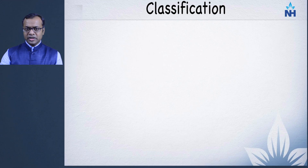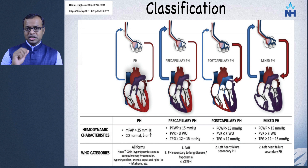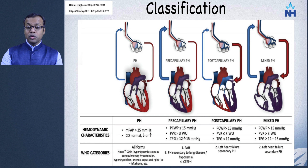In a general sense, you can classify pulmonary hypertension based on the level of pathology. If the pathology is between the heart and the capillary bed, it's called pre-capillary pulmonary hypertension — seen in pulmonary arterial hypertension and chronic thromboembolic pulmonary hypertension. In this condition, the pulmonary vascular resistance is more than three Wood units while the pulmonary capillary wedge pressure is normal.